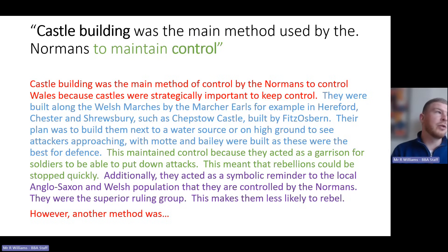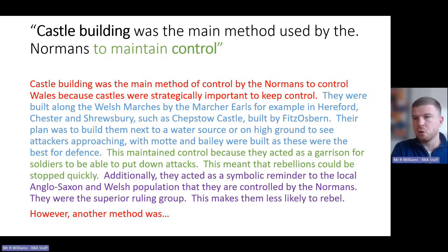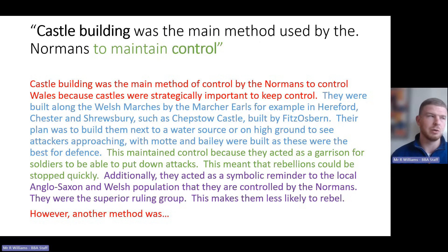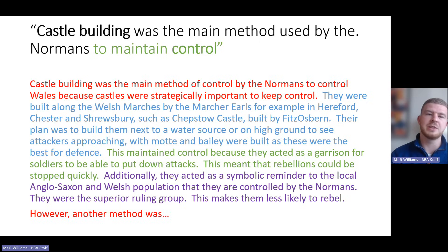Then you need another factor: 'However, another method was the marcher lords' or 'another method was economic control.' Talk about the setting up of towns that brought in people from Europe — places like the Flemish and Wizo coming over — meaning it was easier to keep control because Normans and other Europeans based there were less likely to rebel. Best of luck — remember this is just for 2024, Wales will come up, make sure you have some specific details ready. Bye-bye.